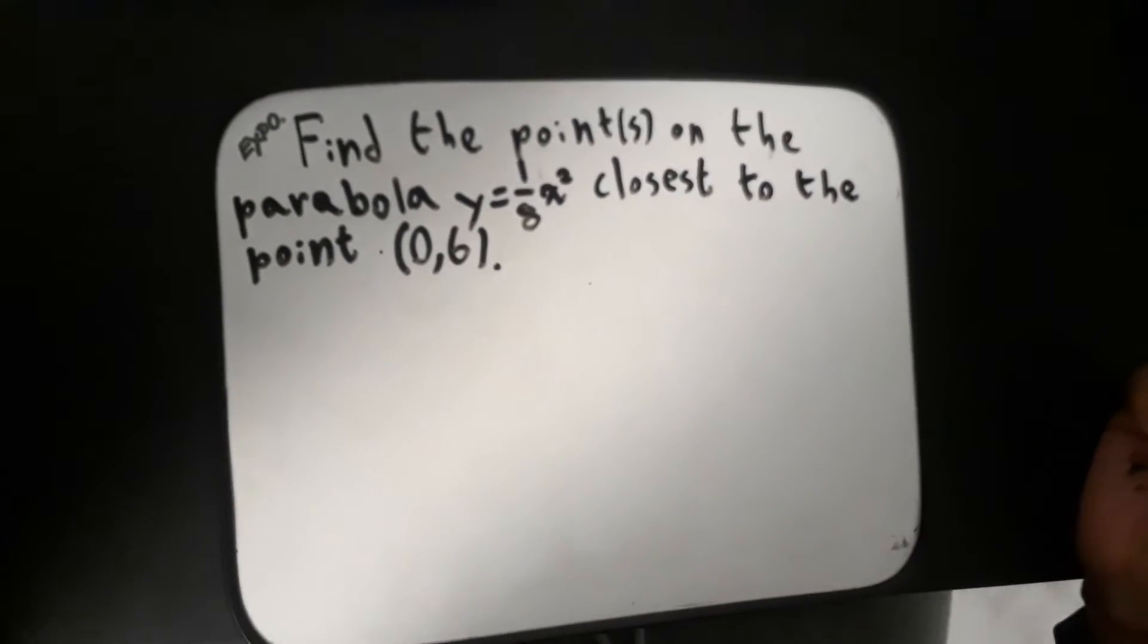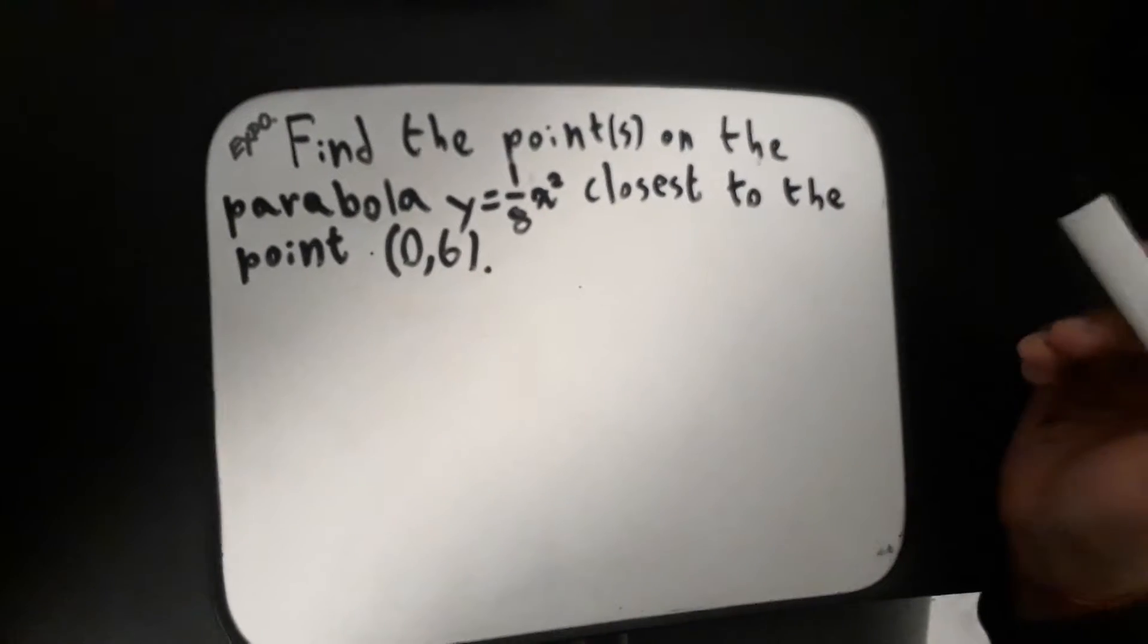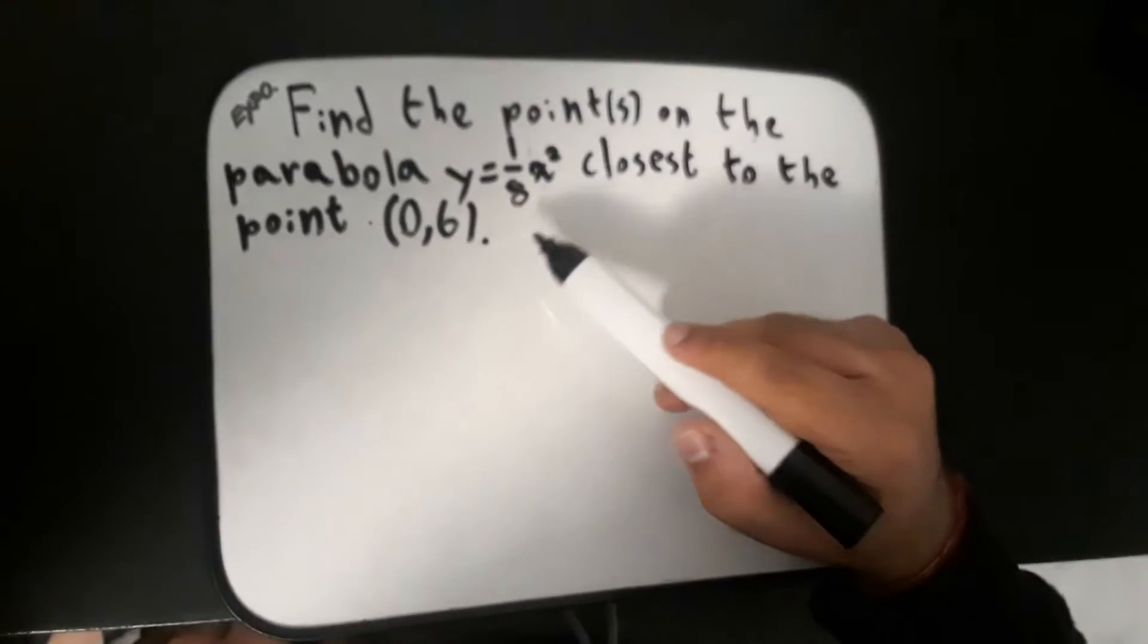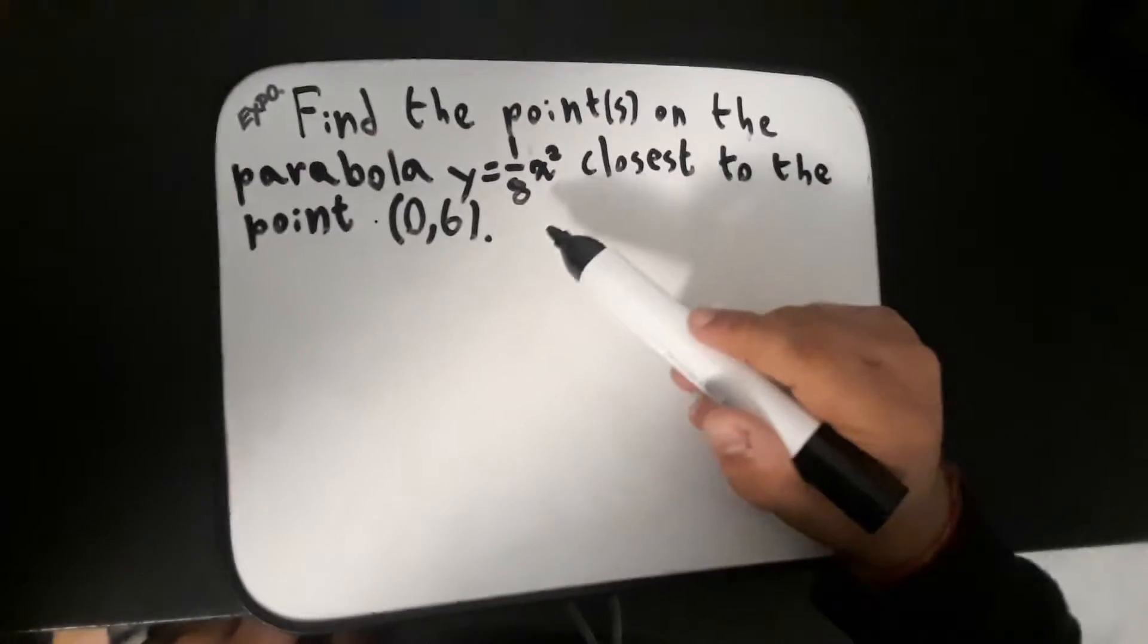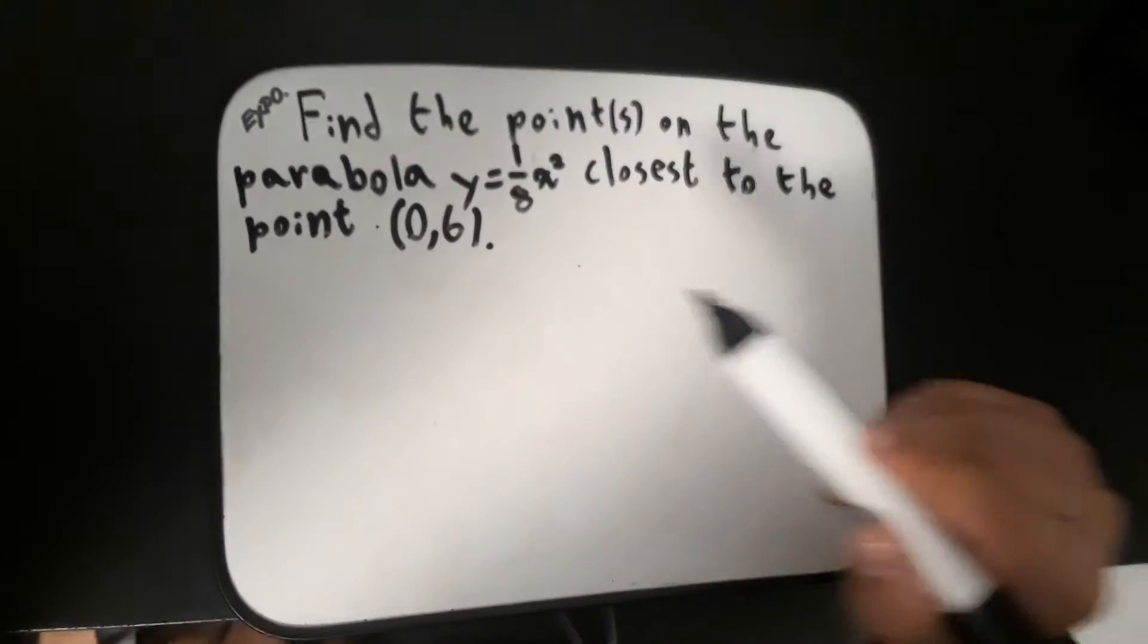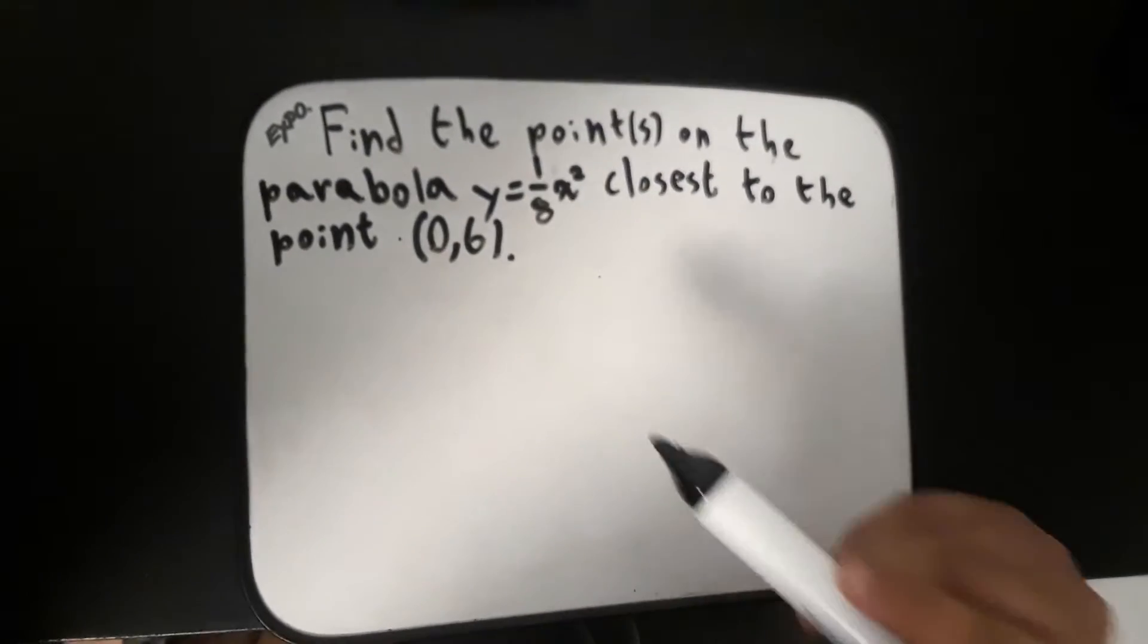For this question, we need to find the point or points on the parabola y equals 1/8 times x squared that are closest to the point (0,6).